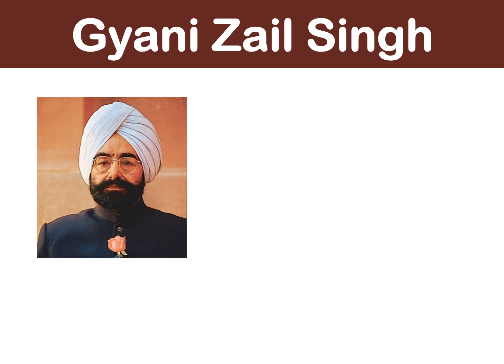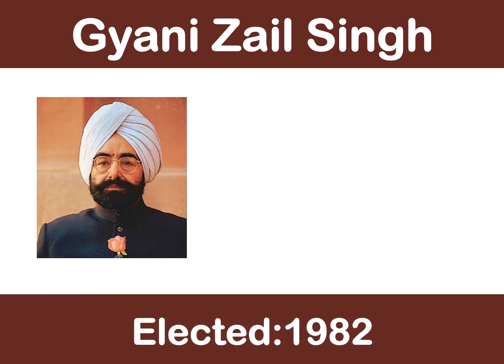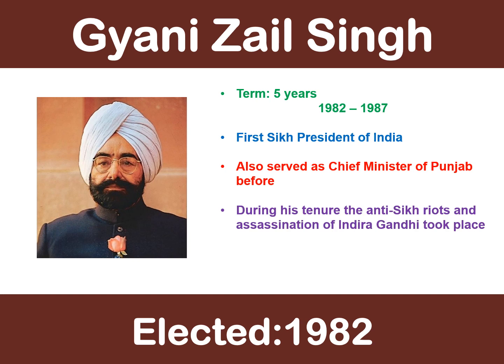The next president was Gyani Zail Singh. He was elected in 1982 and served a term of five years from 1982 to 1987. He was the first Sikh president of India and also served as the Chief Minister of Punjab. During his tenure, the anti-Sikh riots and assassination of PM Indira Gandhi took place. He was the candidate of Indian National Congress.